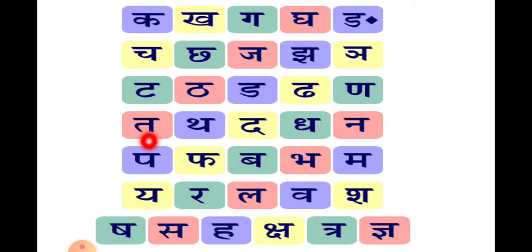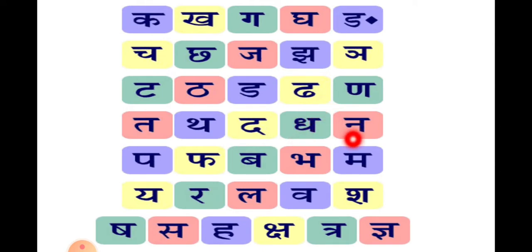और तवर्ग — त से तरबूज। थ से थर्मस। द से दवाई। ध से धनुष। न से नल।